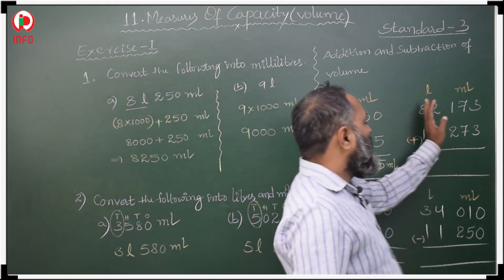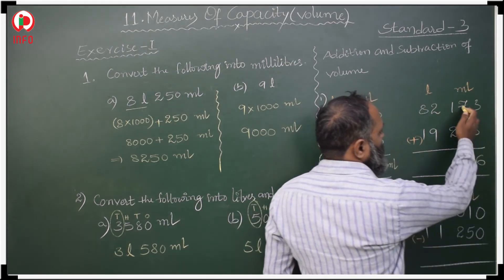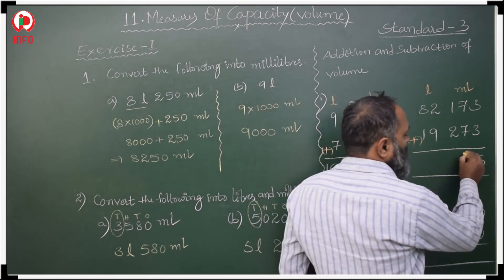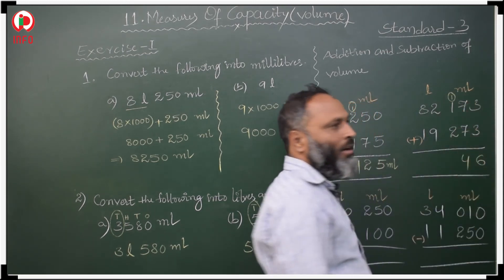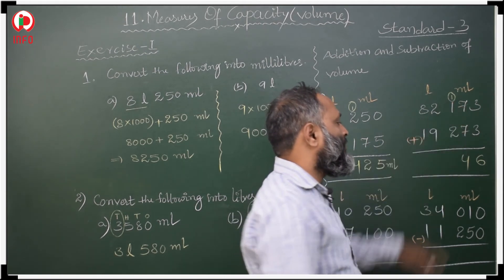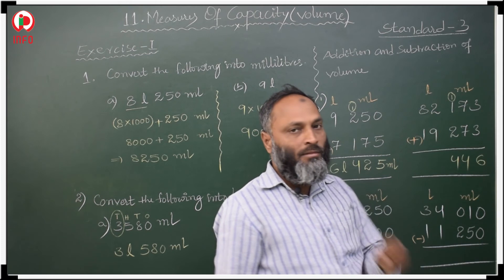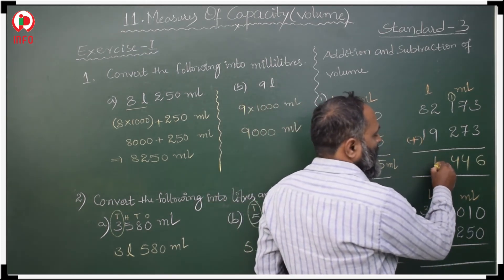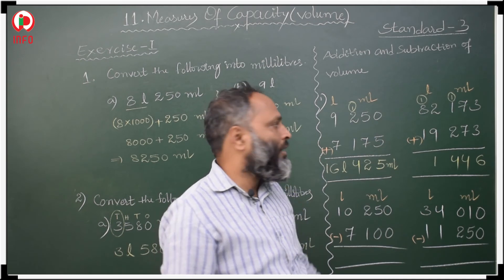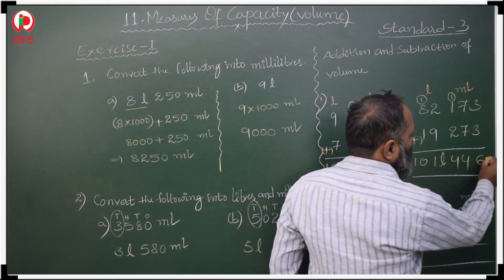Second addition example: milliliters — 3 plus 3 is 6, 7 plus 7 is 14, write 4 carry 1, 2 plus 1 plus 1 is 4 — milliliters = 446. Liters: 9 plus 2 is 11, write 1 carry 1, 8 plus 1 plus 1 is 10 — write 101 liters. Answer: 101 liters 446 milliliters.